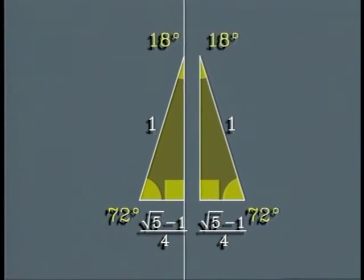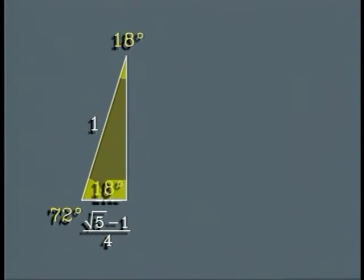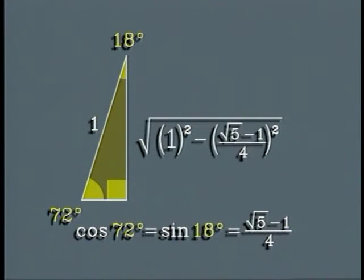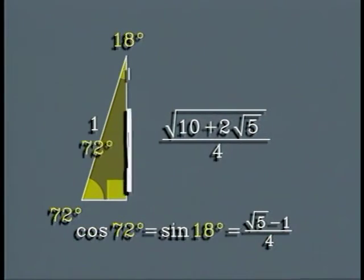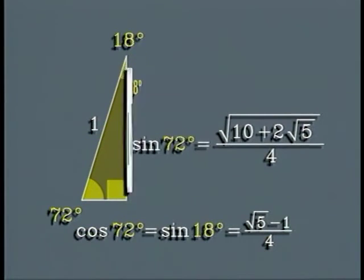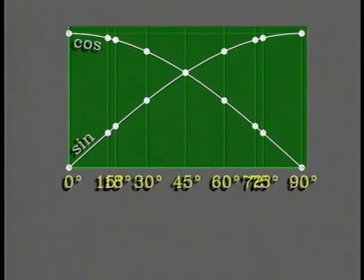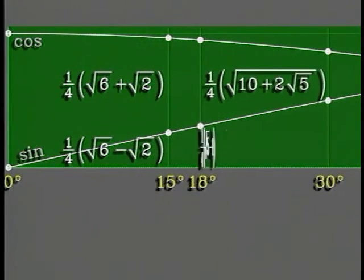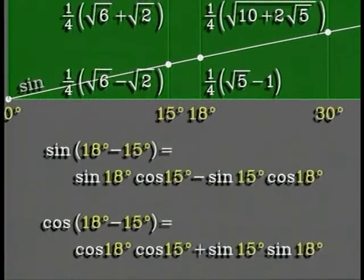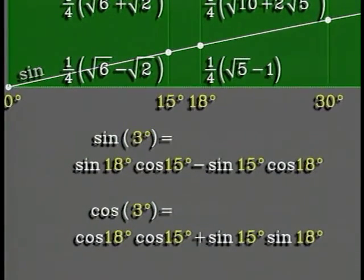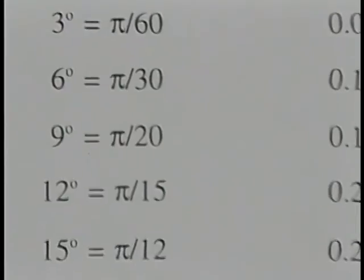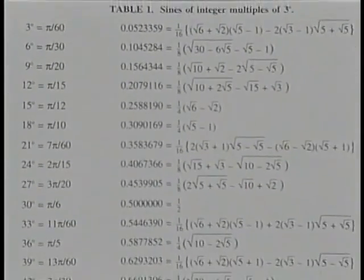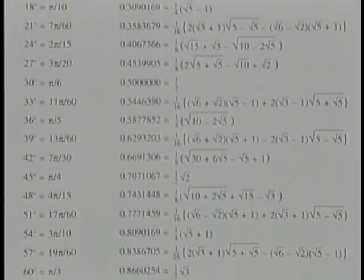Because we know the sine and cosine of 15 degrees and 18 degrees, the subtraction formulas give us the sine and cosine of 3 degrees. Then by repeated use of the addition formulas, we can find the sine and cosine of 6 degrees, 9 degrees, 12 degrees, and all integer multiples of 3 degrees.